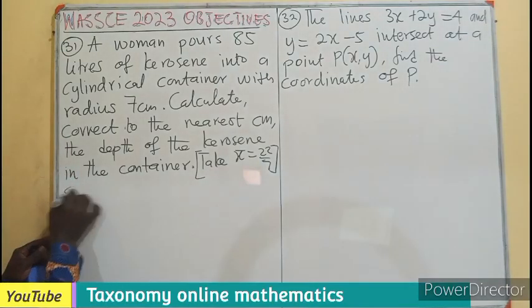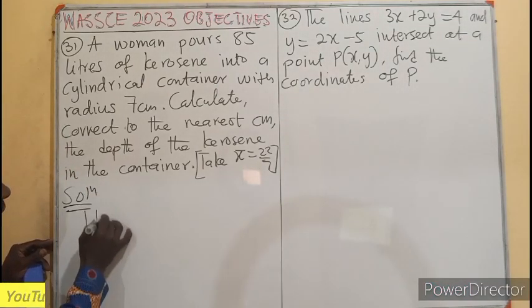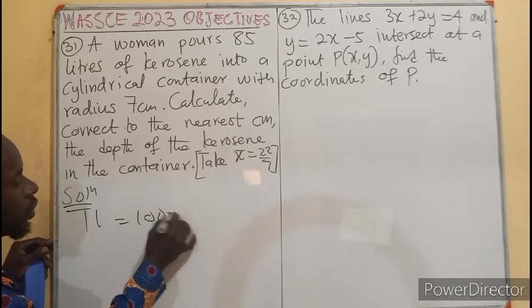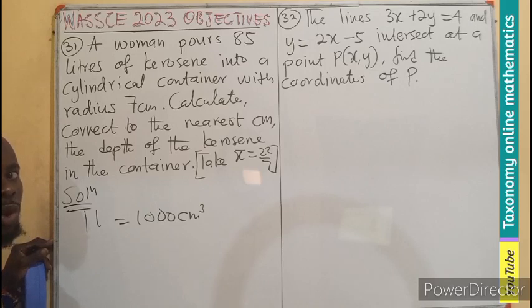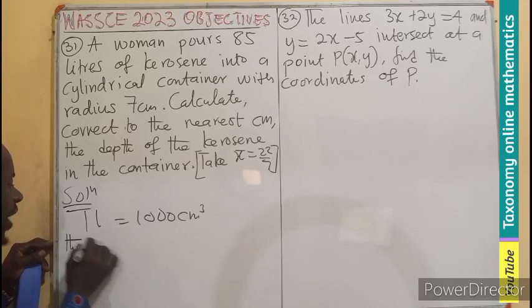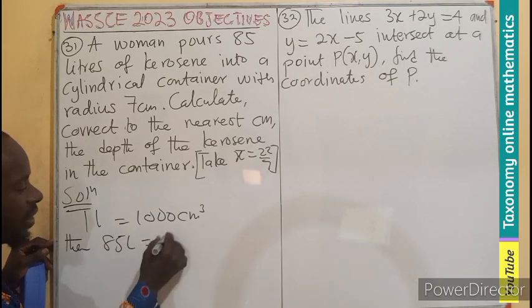So what do we do? We are going to start by saying that 1 liter equals to 1,000 cm³ in terms of conversion. So if 1 is given as this, then we expect 85 liters to be more. So if more, let's divide.